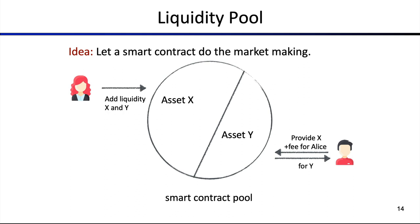The idea is to let a smart contract do the so-called market making. Market making is the process of serving the markets. In the order book model, you have orders on the bid and ask side that must match in the middle. The more orders there are and the deeper the liquidity, the better the financial efficiency of the market. Instead of having external actors putting in orders manually, we have a smart contract that does everything — and this is the basis of an AMM.